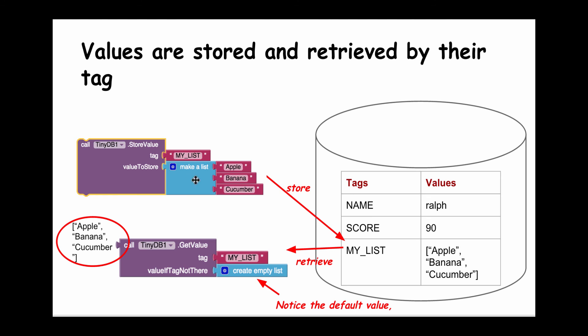App Inventor will take the entire list and store it in a form that looks something like this in the database. When you want to retrieve it, the same principle applies. You need to provide the tag associated with your data, and you will get back the list that you stored with that tag.